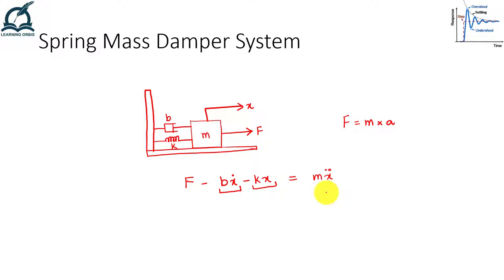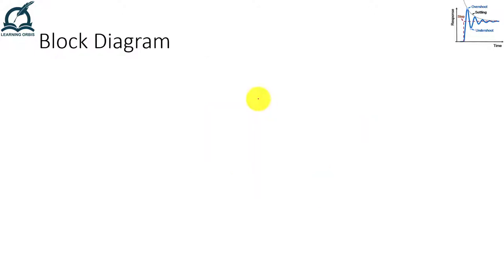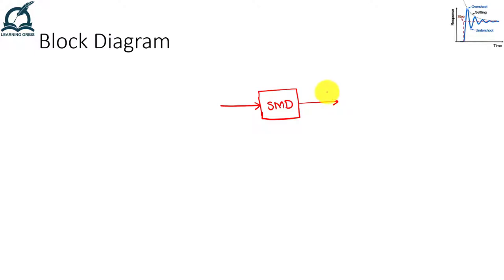Now we need to model this equation in MATLAB. Before doing that, let me draw a block diagram. We will have a plant, which is our spring-mass-damper system labeled SMD. We apply some force on this system and it produces a positional change x. This is an open-loop system, so we have no control over the output position of the mass.